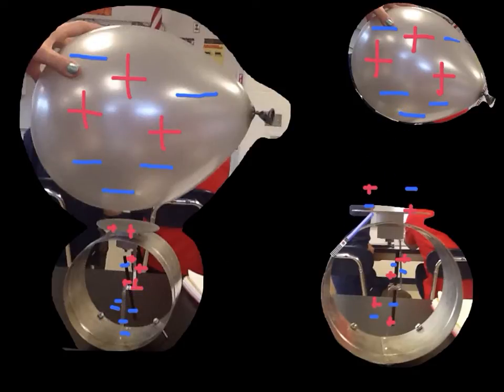...away from the electroscope, it becomes unpolarized because the negative charges are no longer repelling from the negative charges in the balloon.